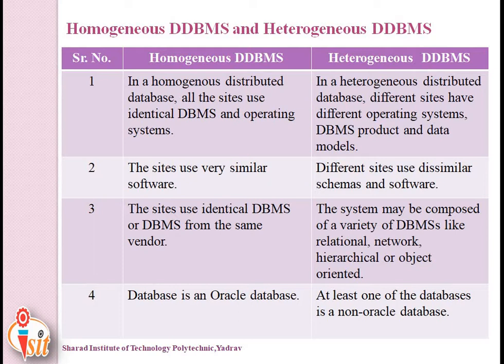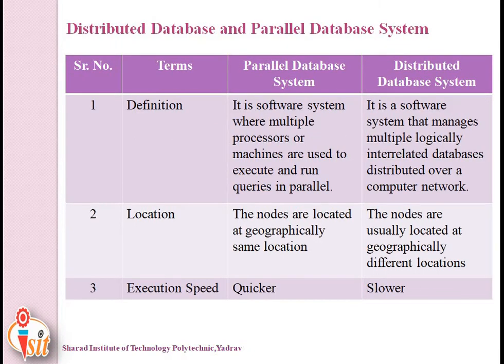In a heterogeneous distributed database, different sites use dissimilar schemas and software. In a homogeneous distributed database system, the sites use identical database management systems from the same vendor. In a heterogeneous distributed database system, the system may be composed of a variety of database management systems like relational, network, hierarchical, or object-oriented. The last difference is that in a homogeneous system the database is Oracle, whereas in a heterogeneous system at least one database is non-Oracle.